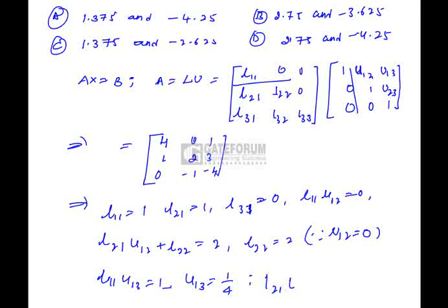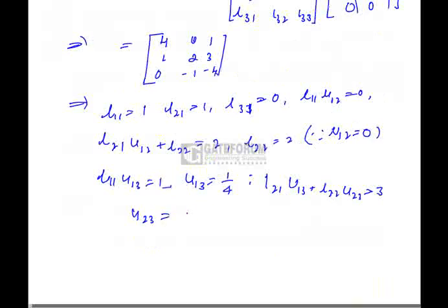Now, L21, U13 plus L22, U23 is nothing but 3 whereas U23 is nothing but 11 by 8 because L21 is 1 and substitute the value of L31 which is 0 and if we simplify it is U23 equal to 11 by 8, which is 1.375. Similarly, if we simplify, we will get the value of L33 as minus 2.625. Then option C is correct.